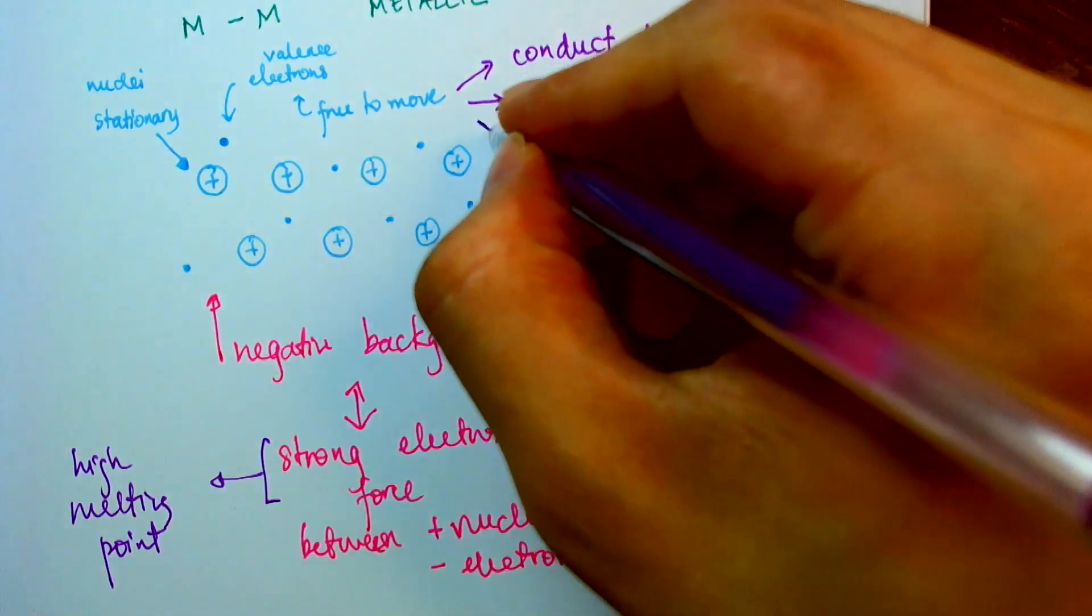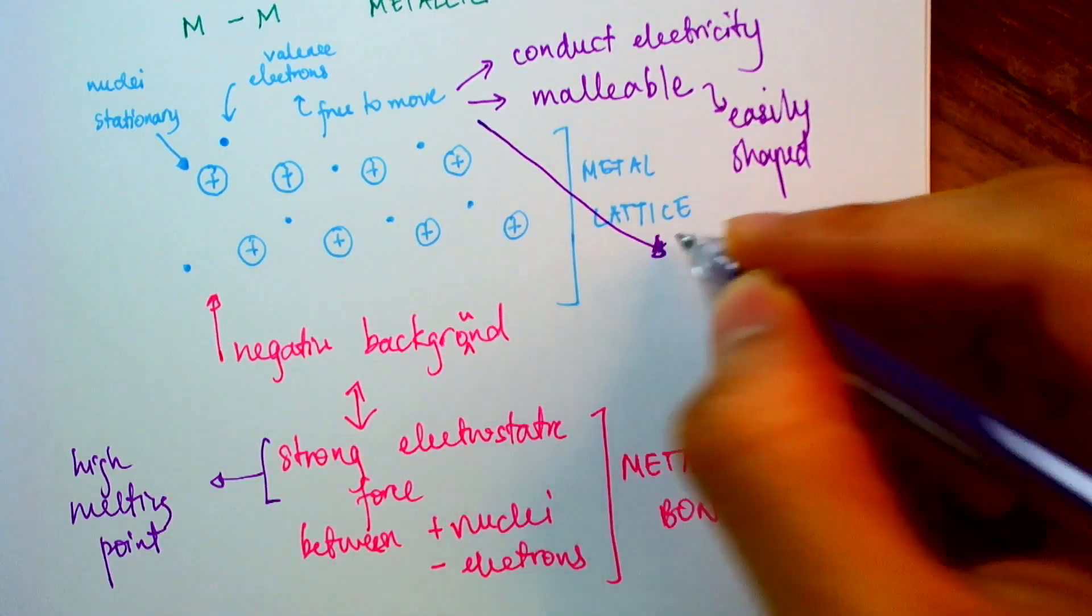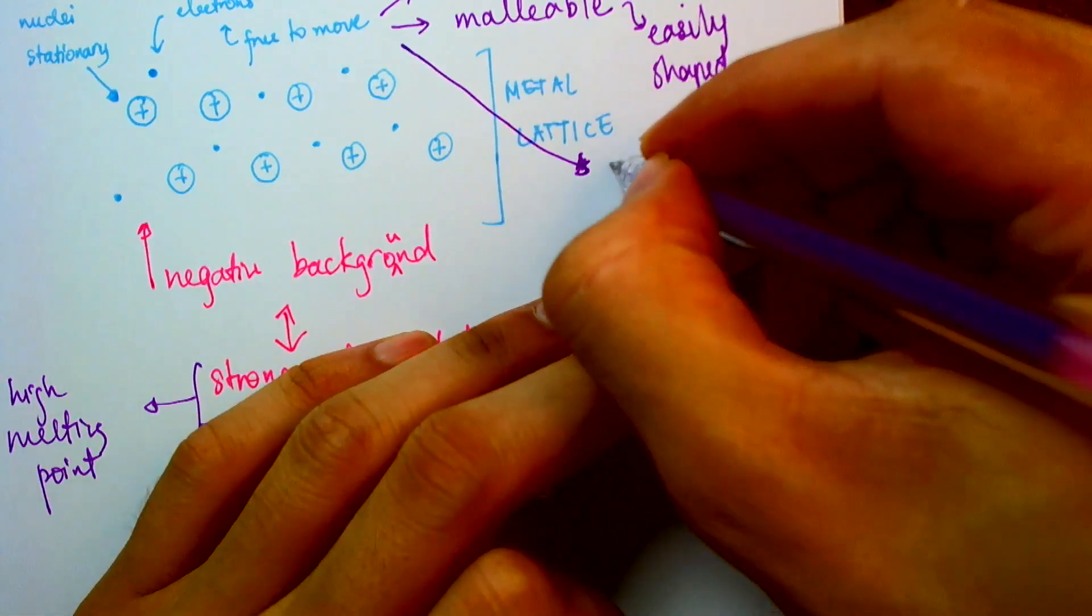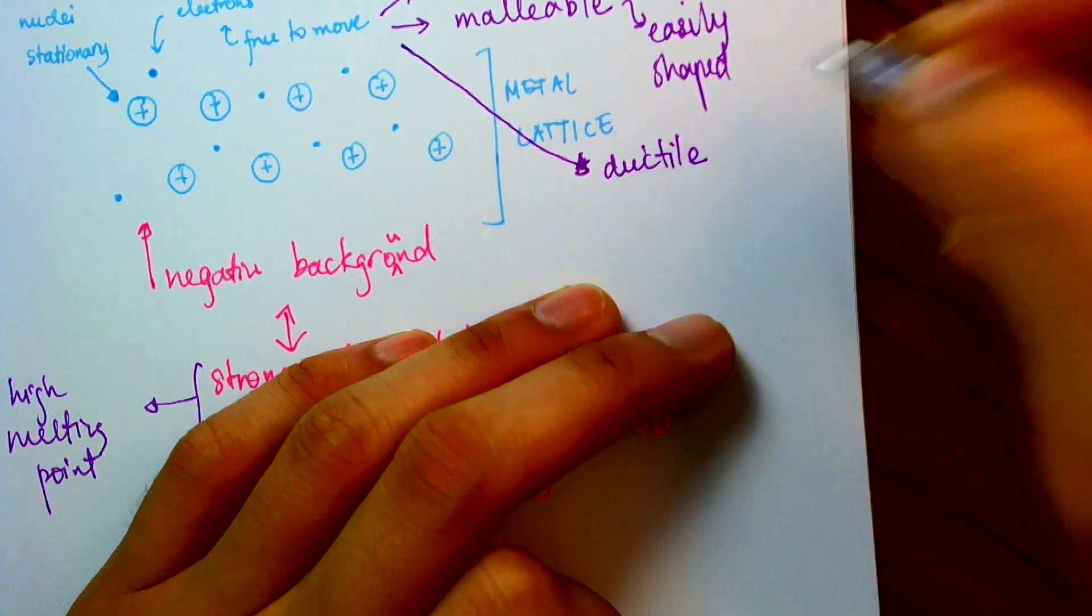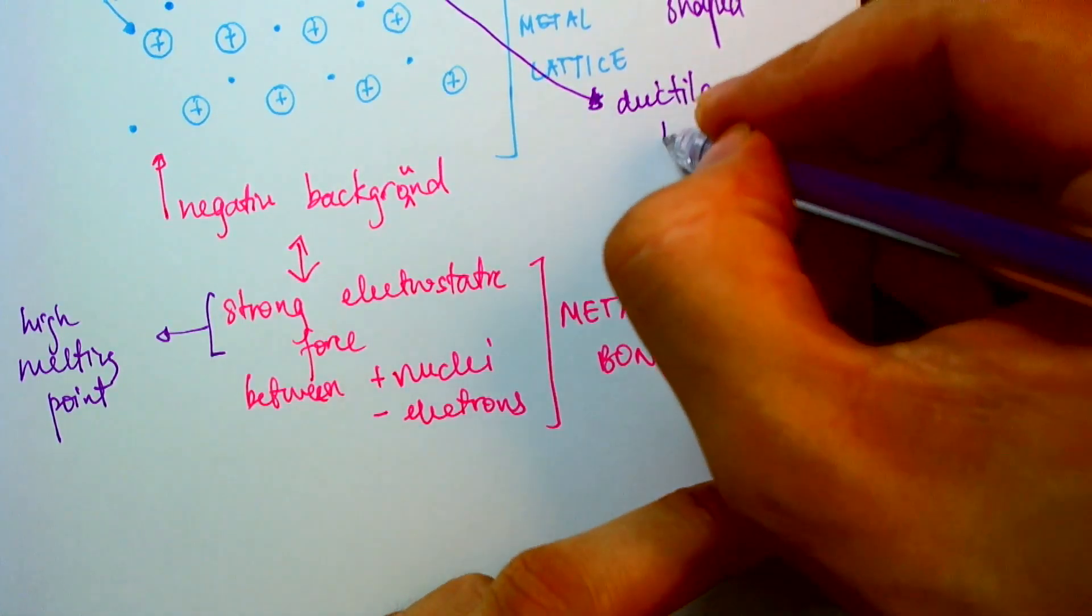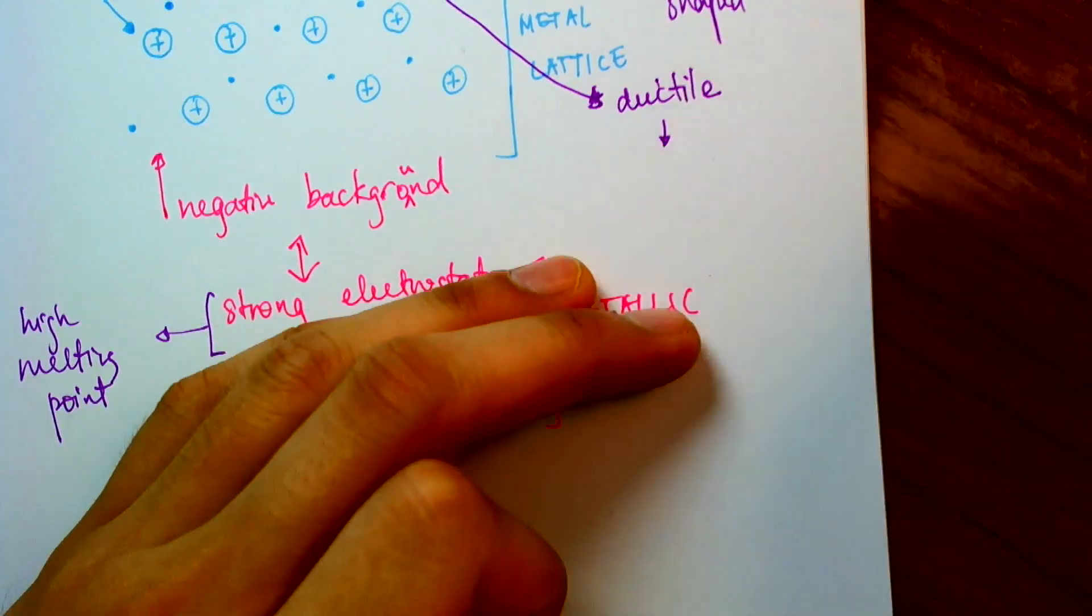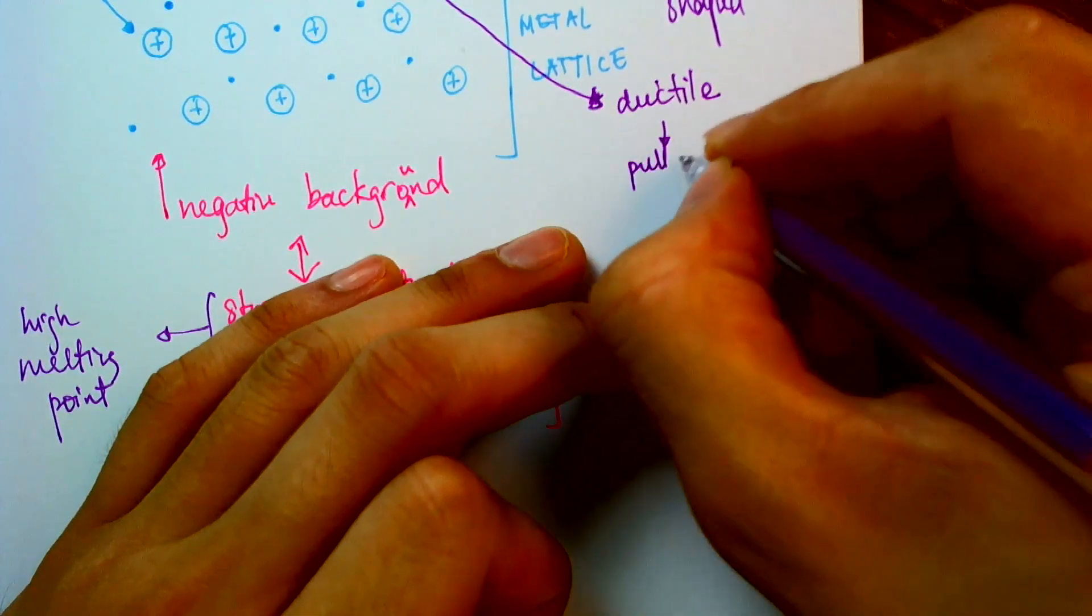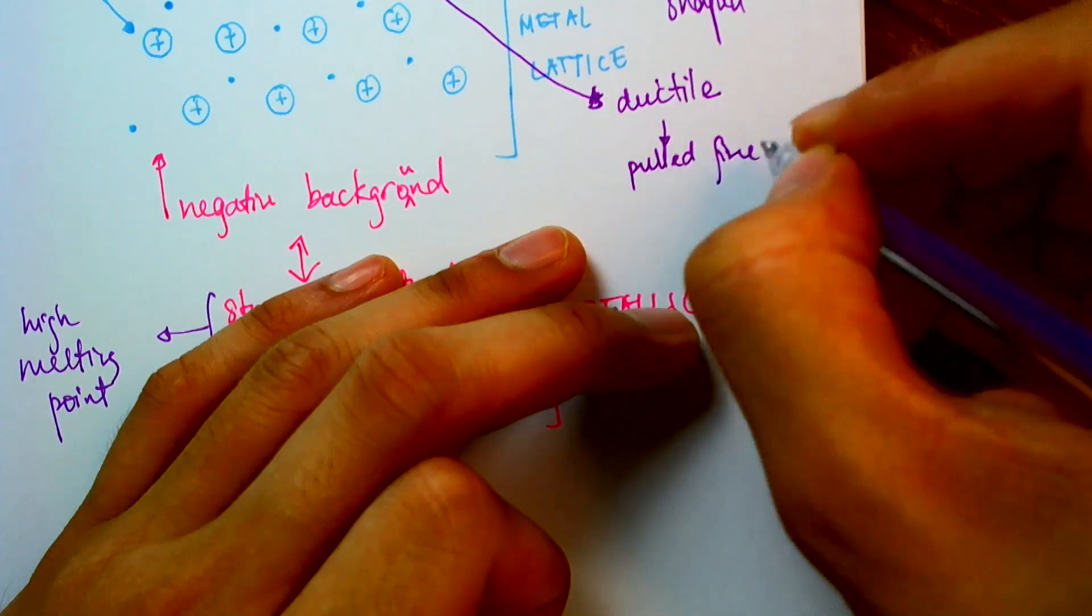And finally, these free to move electrons also give rise to a property that's unique in metals, which is called ductility. Ductility just means the ability to be pulled into a fine wire.